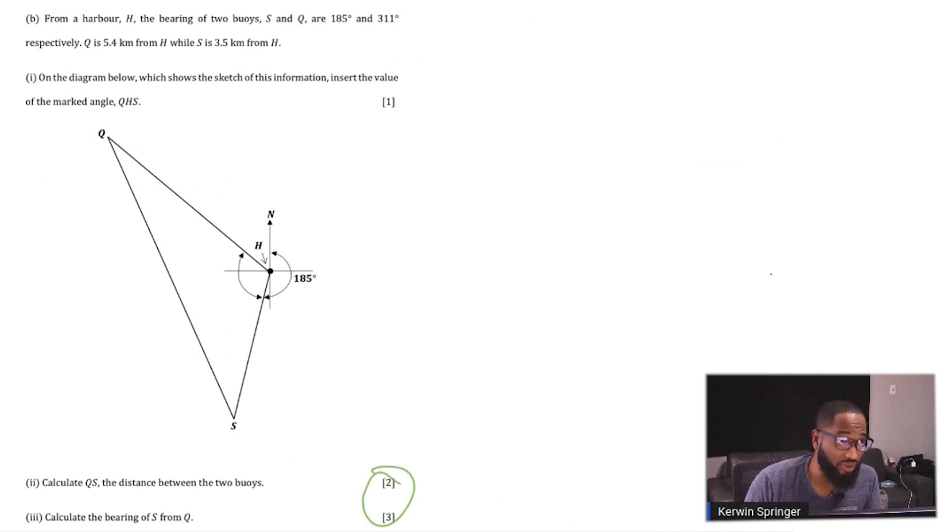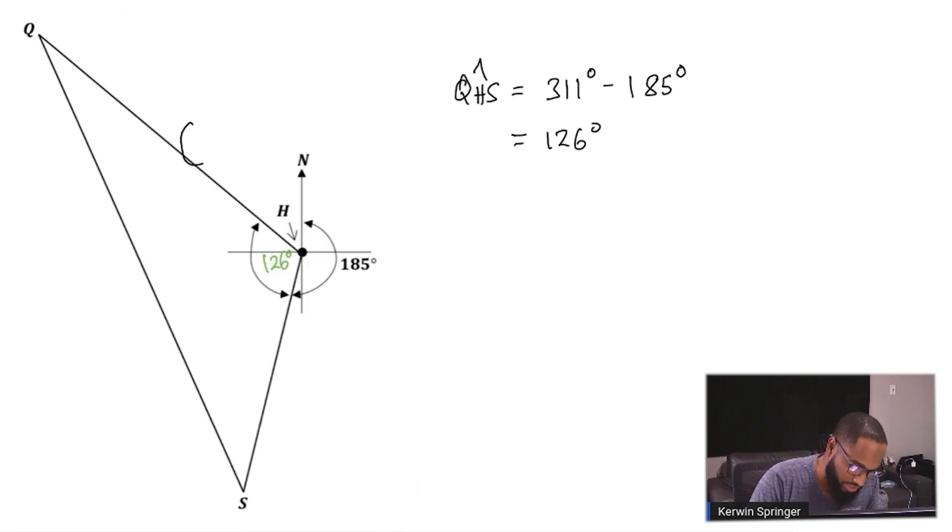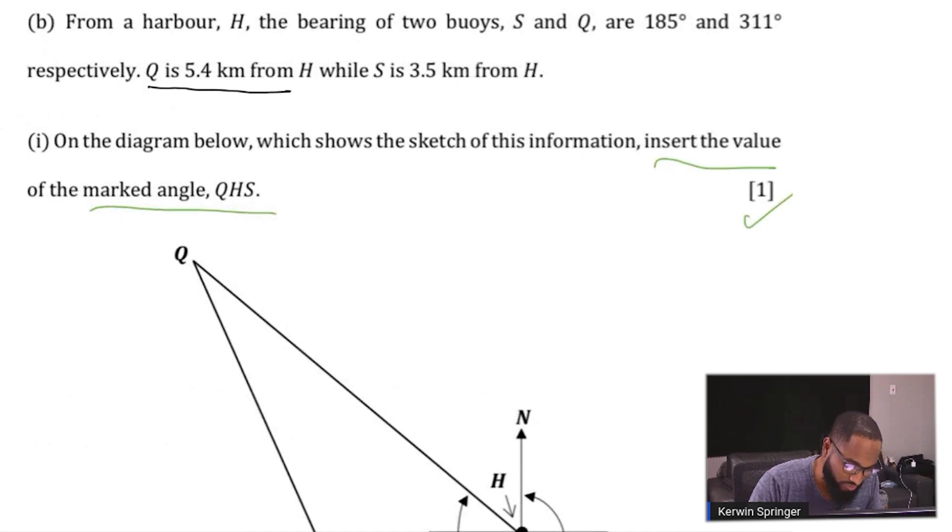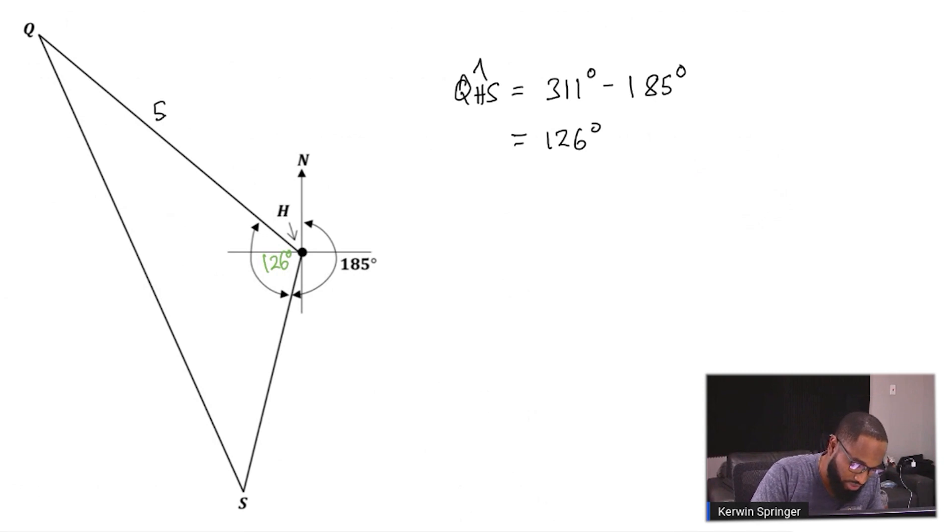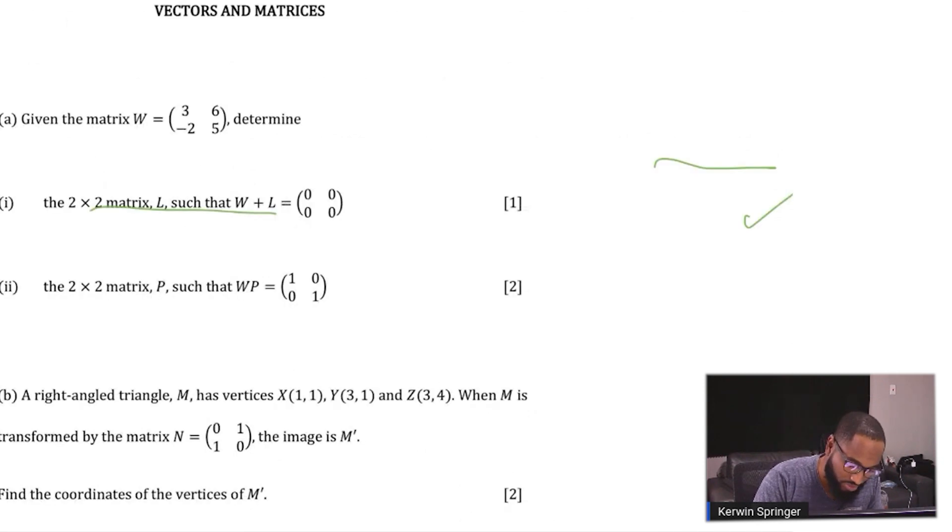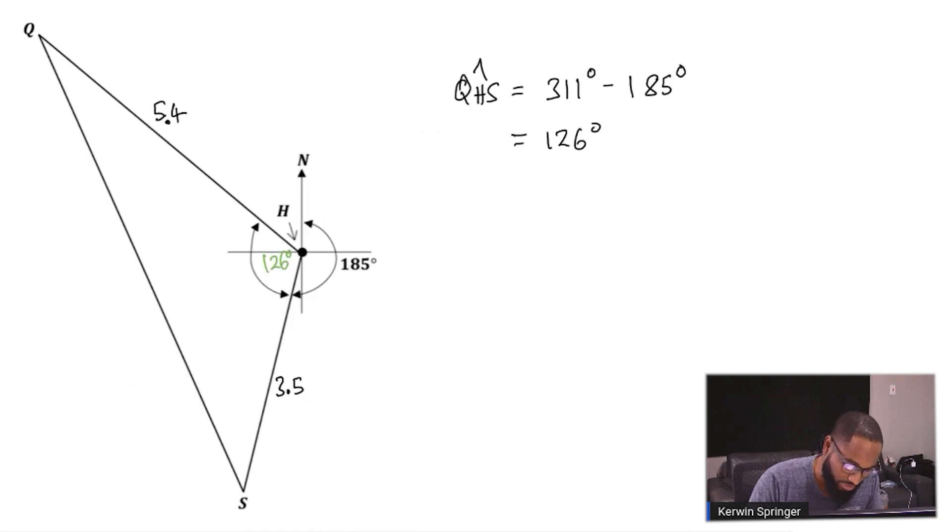Calculate QS, the distance between the two buoys. We were given this length and that length. Q is 5.4 and 3.5 is S from H. So we have 5.4 here and 3.5 from H to S in kilometers.